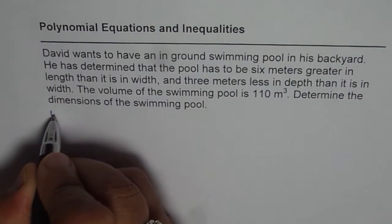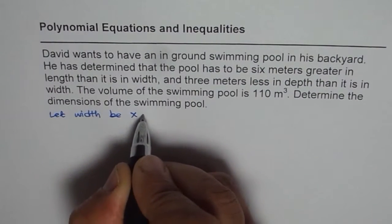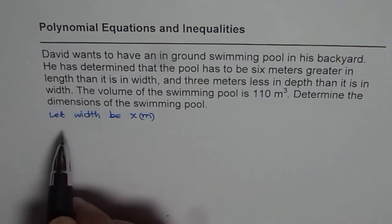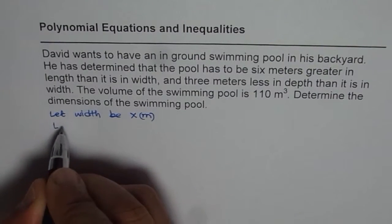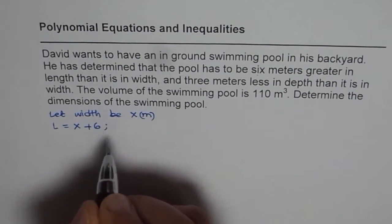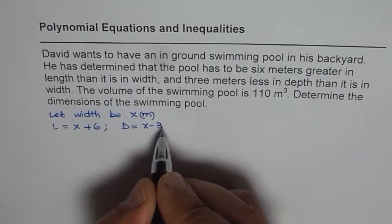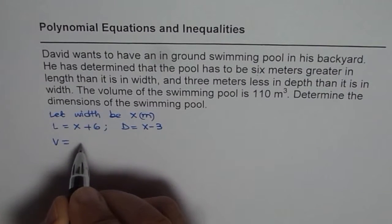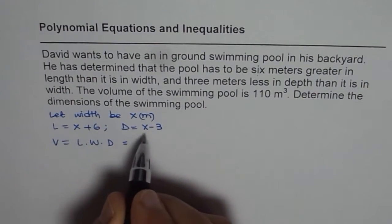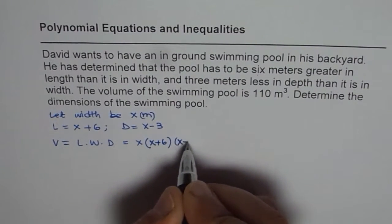Let's start with the let statement. Let width be x meters. Since both length and depth are given in terms of width: if width is x meters, length will be x + 6 (6 meters greater), and depth is going to be 3 meters less than width, so x − 3. Volume of the swimming pool is length × width × depth, which gives us x(x + 6)(x − 3).